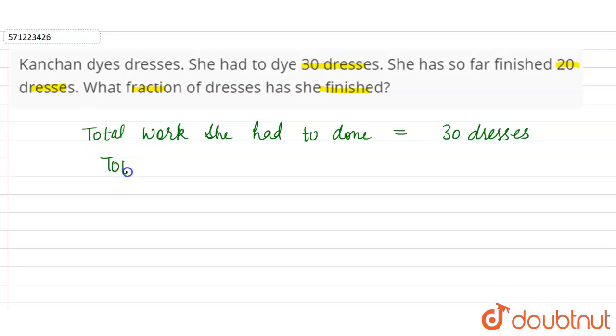And total work done by her - total work done by her is 20 dresses. So she has made 20 dresses so far.